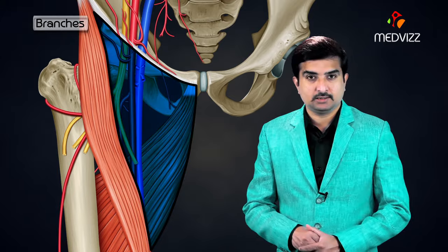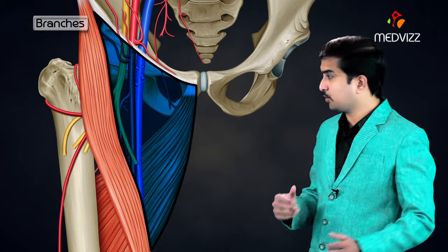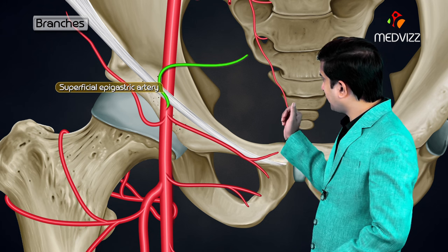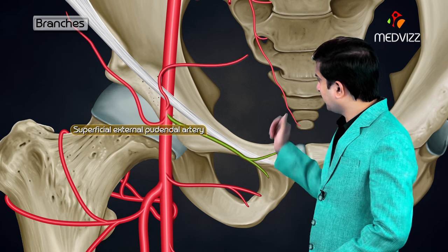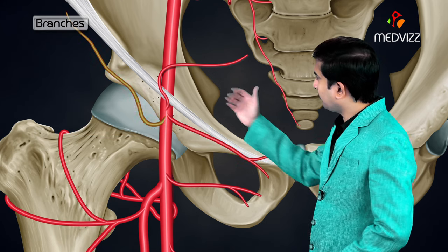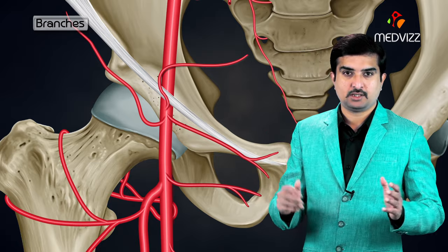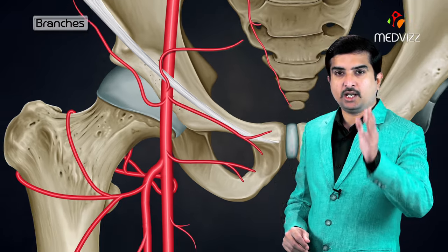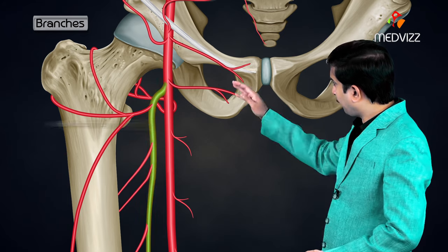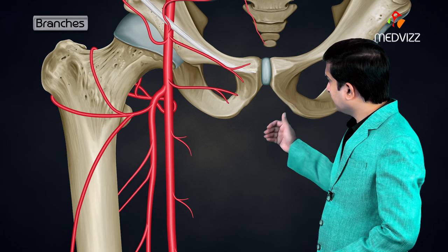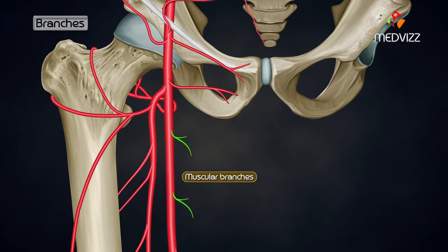In the femoral triangle, the artery gives off three superficial branches: superficial epigastric artery, superficial external pudendal artery, and superficial circumflex iliac artery. There are also three deep branches: the profunda femoris artery, the deep external pudendal artery, and muscular branches.